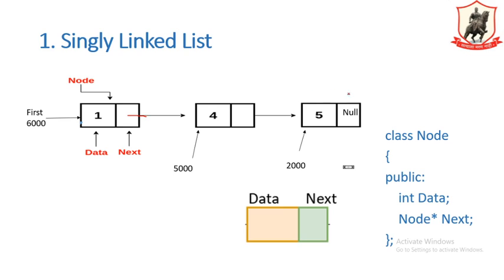In the same way, memory is allocated for the third node at base address 2000. Storing 2000 in the next field of the second node links the second and third nodes. As this is the last node with no successor, we store the null pointer in its address field. Null pointer implies it is not pointing to any other memory location. To traverse this linked list, we need the base address of the first node — if we lose it, we lose the entire linked list.